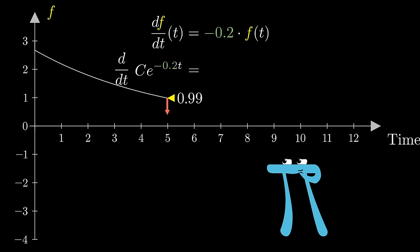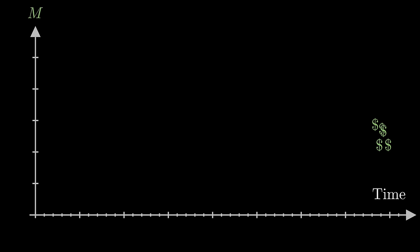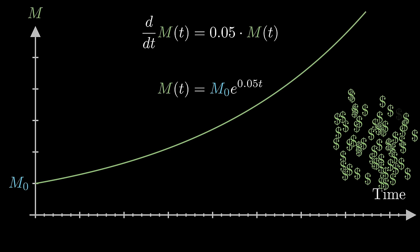The upshot is that the derivative of e to some constant times t is equal to that constant times itself. If the rate at which your investment grows, for example, is always, say, 0.05 times the total value, then its value over time is going to look like e to the 0.05 times t times whatever the initial investment was.